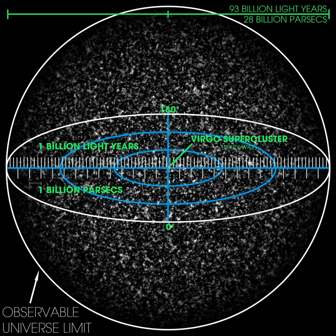The observable universe is a spherical region of the universe comprising all matter that can be observed from Earth at the present time, because electromagnetic radiation from these objects has had time to reach Earth since the beginning of the cosmological expansion. There are at least two trillion galaxies in the observable universe. Assuming the universe is isotropic, the distance to the edge of the observable universe is roughly the same in every direction. That is, the observable universe has a spherical volume centered on the observer.